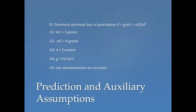So it might be the case that your first auxiliary assumption is that the mass of the first object is 3 grams. The second auxiliary assumption, A2, is that the mass of the second object is 4 grams. A3 is that the distance between them is 2 meters. A4 is that the gravitational constant is 9.8 meters per second squared.